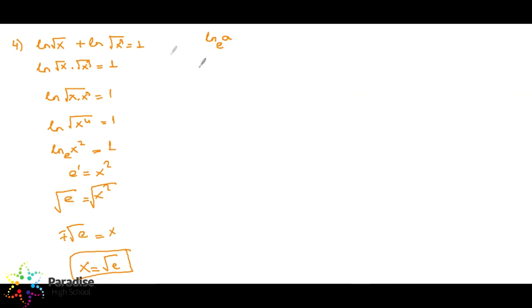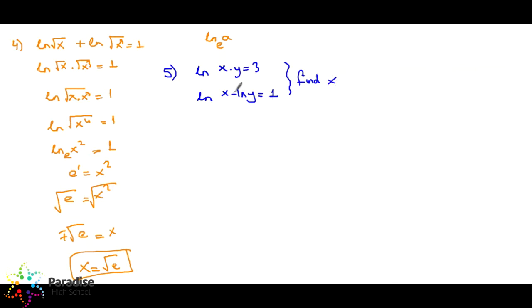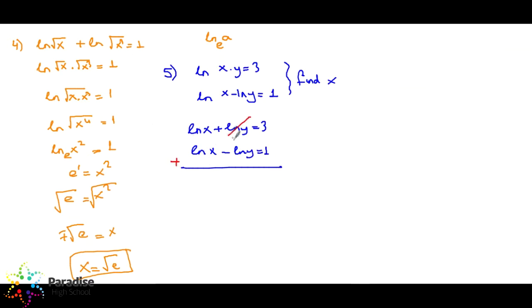Question number five: ln(x times y) equals three, ln x minus ln y equals one. Find x and y. Expanding the first equation using logarithm rules: ln x plus ln y equals three. The second equation is ln x minus ln y equals one. This resembles simultaneous equations. Adding both equations: 2 ln x equals four, so ln x equals two. Converting to index form: x equals e squared.